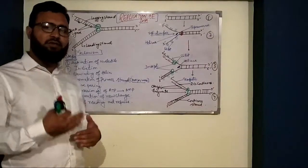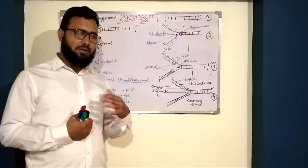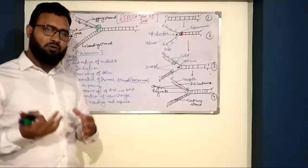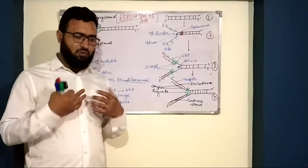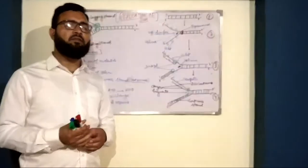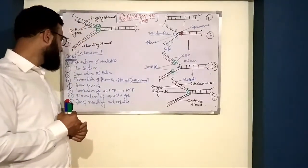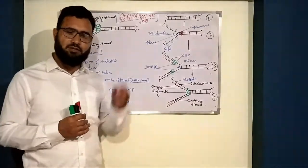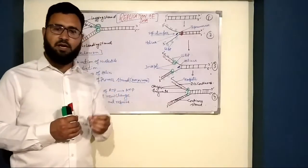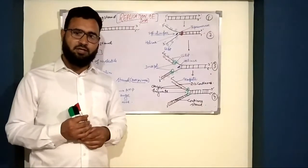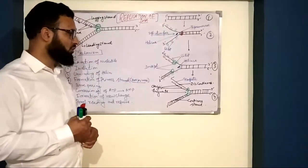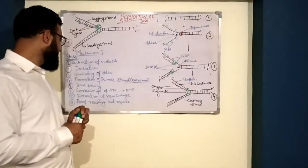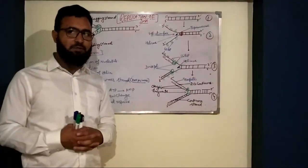There are different steps in the replication mechanism, and we will explain them step by step. The first step is the activation of nucleotides. The second step is the initiation of replication, which occurs only at specific sites. In eukaryotic cells there are multiple initiation sites, while in prokaryotic cells there is only one. After that comes the unwinding of the DNA helix.